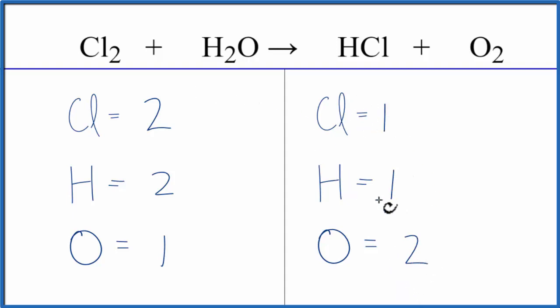I could balance the chlorine and the hydrogen first by putting a coefficient of two in front of the HCl, but I can see this oxygen here is going to cause problems because when I try to balance that I'm going to change the number of hydrogens. So I'm going to deal with the oxygens first. I'm going to put a two in front of the H2O.